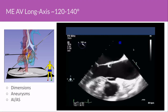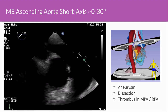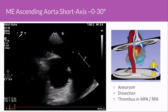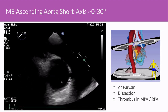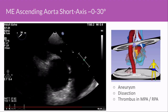Here is a normal example. By pulling the probe up a little bit, we obtain the mid-esophageal ascending aorta views. In the short axis view, you can see the main pulmonary artery and the RPA. Sometimes you can also visualize part of the LPA by rotating left. We have the proximal ascending aorta, and next to it the SVC. In this view you would see large aneurysms, dissections, and potentially large thrombi in the pulmonary artery.